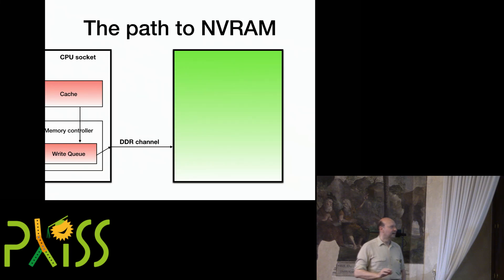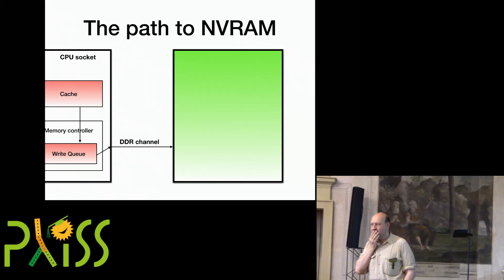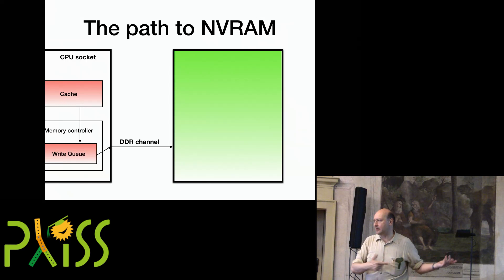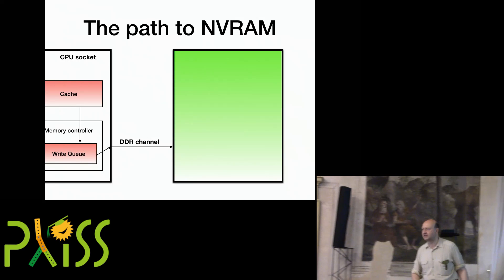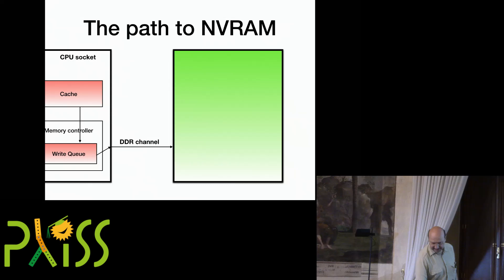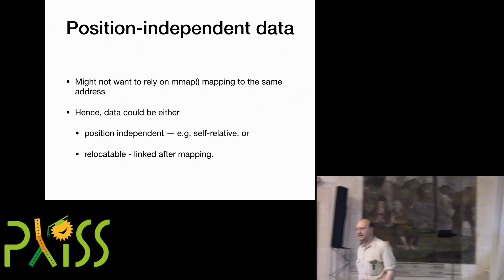On each one of these modules is a source of extra energy — a supercapacitor. The guarantee is that the energy stored in the supercapacitor will be enough to commit all of the volatile state on the module into the non-volatile memory. So you can treat that boundary as a boundary of persistence. There is a variant being proposed called extended ADR, where there is an energy supply in the system that will flush all of the caches. No vendor is currently talking about shipping a system like that — just too much supercapacitor capacity would be required.